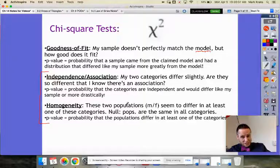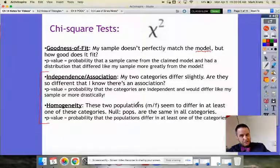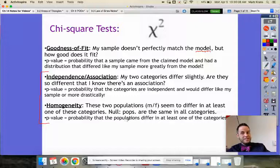Homogeneity: these populations are the same or these treatments have the same response, or the alternative is that they're different.